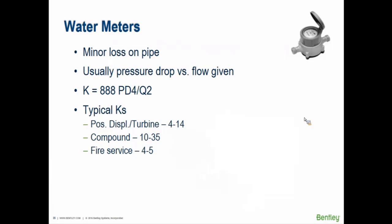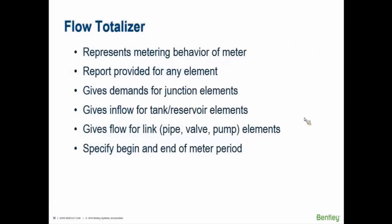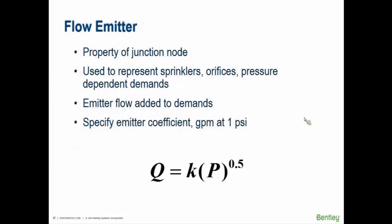Water meters generally don't require modeling of head loss through them since that's the customer handoff point, though you can apply a K value from the meter manufacturer catalog if needed. Flow totalizers can track the total amount of flow through any element over time. Flow emitters — for things like sprinklers or irrigation systems — allow water to exit the system, and we'll discuss those more during the fire flow presentation.